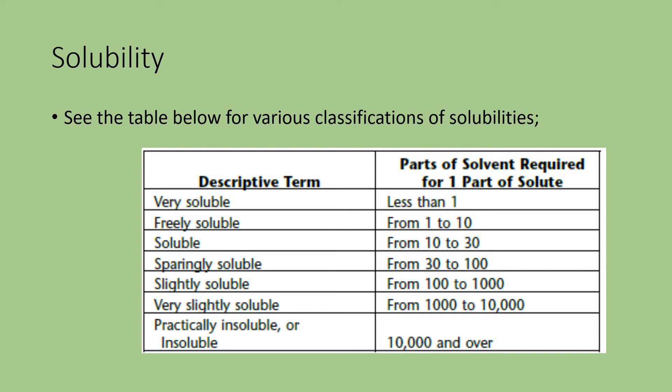Sparingly soluble is 3.33% on the upper side and 1% on the lower side. The slightly soluble character is between 1% and 0.1%. Very slightly soluble is between 0.1% and 0.01%. Anything less than 0.01% is considered as practically insoluble or insoluble. One important point to note: when the solubility of the article is on the lower side, it is recommended to classify it under the next descriptive term. For example, if an article is soluble at around 30 parts, it is better to classify it as sparingly soluble rather than soluble.